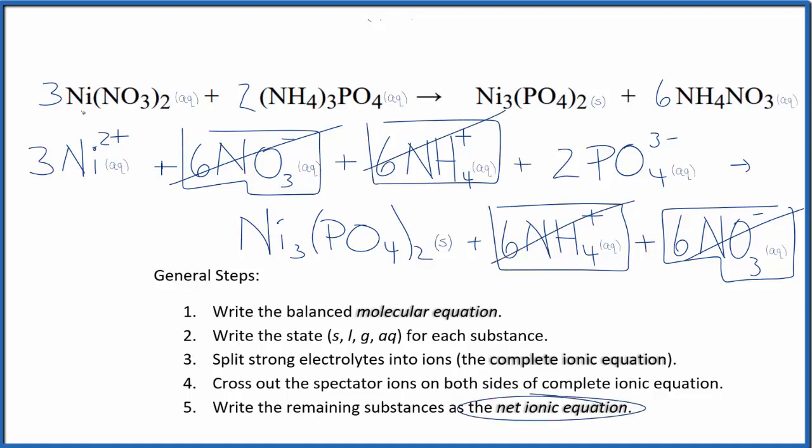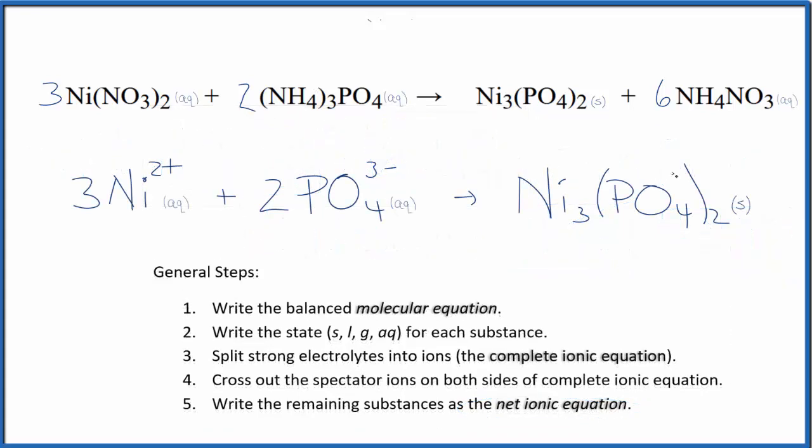What's left is the net ionic equation for Ni(NO3)2 plus ammonium phosphate. Let's remove the spectator ions. And this is our balanced net ionic equation.